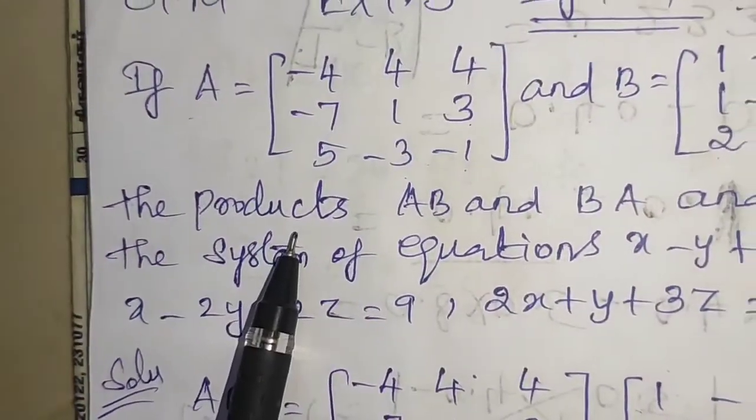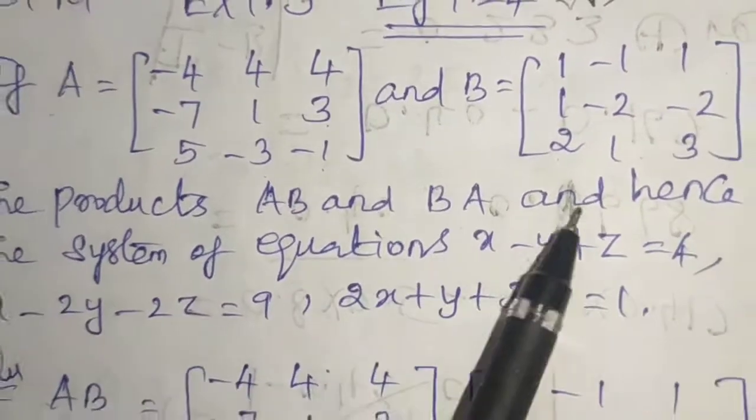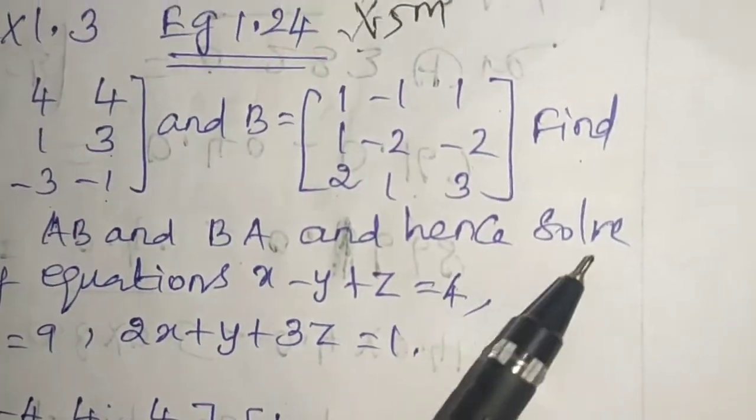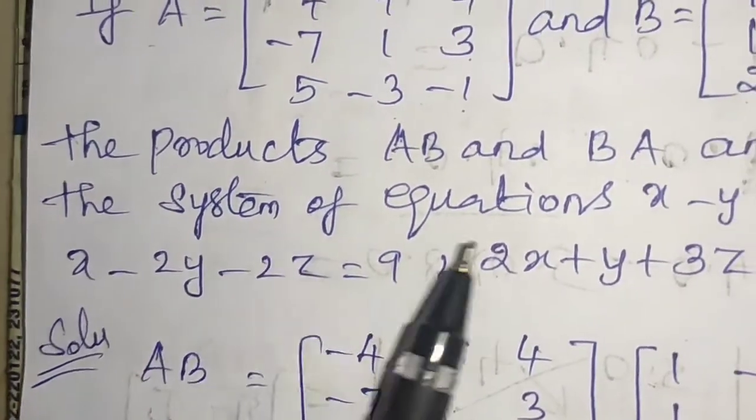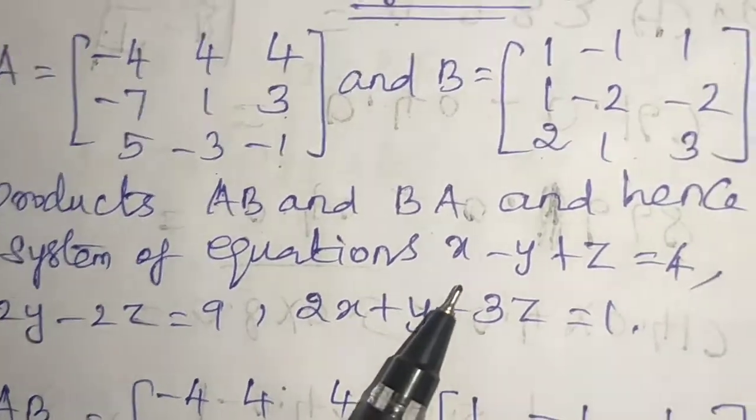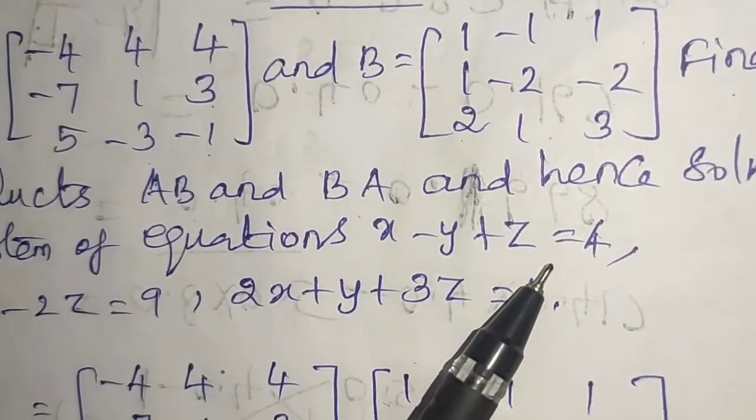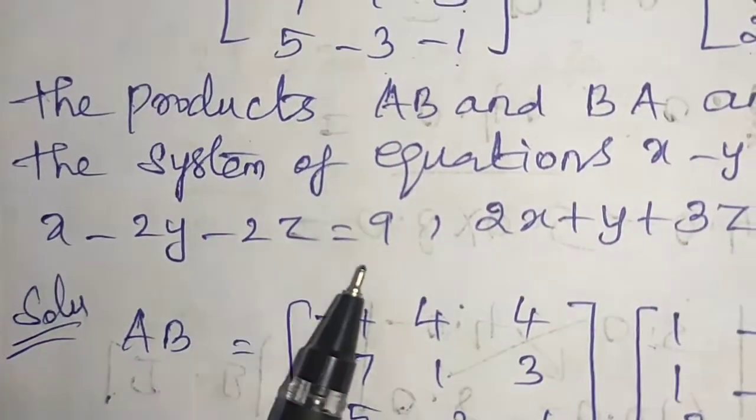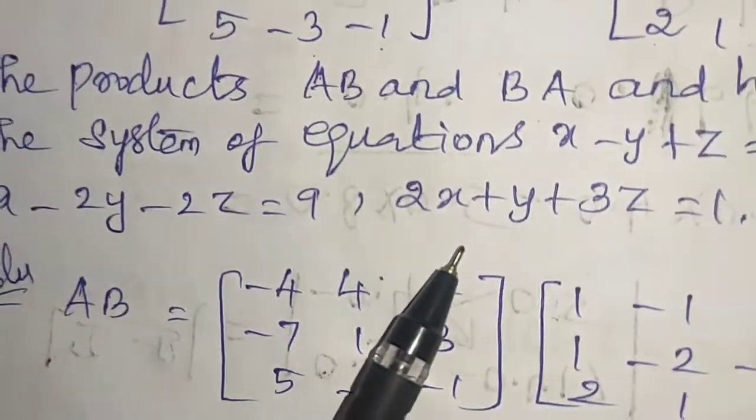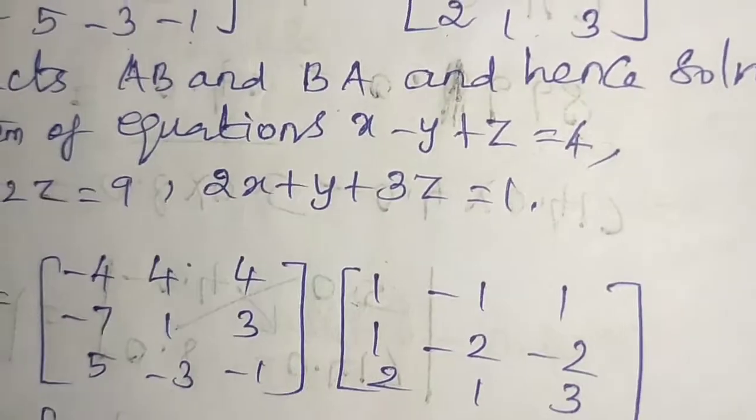Find the products AB and BA and hence solve the system of equations x minus y plus z equal to 4, x minus 2y minus 2z equal to 9, 2x plus y plus 3z equal to 1.